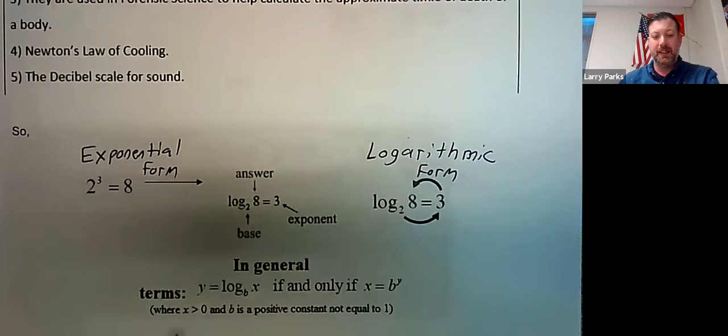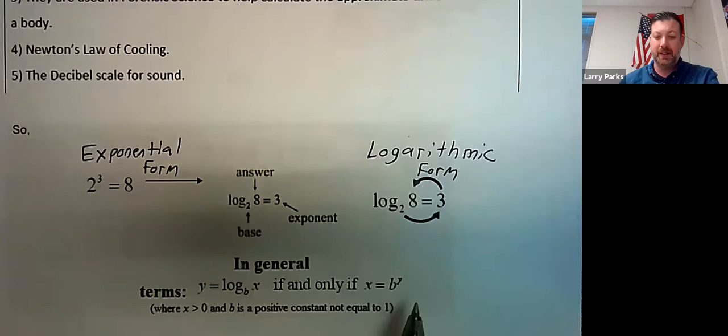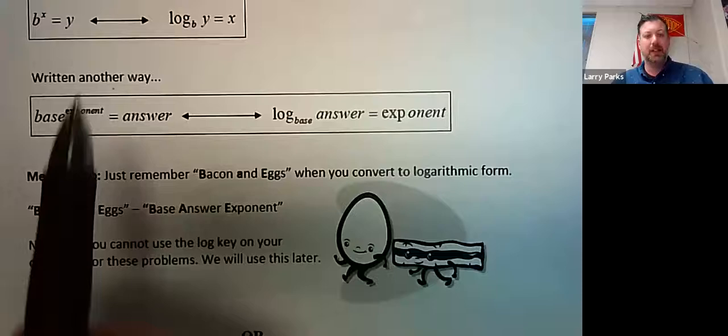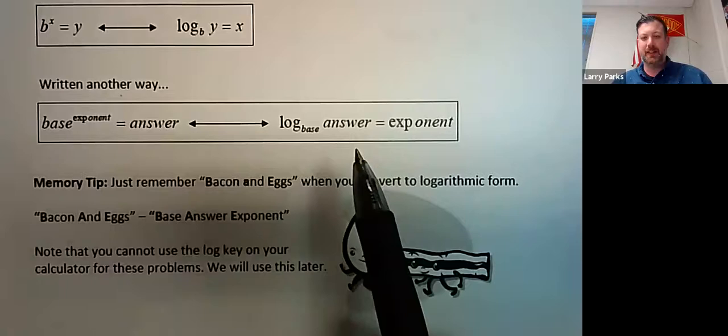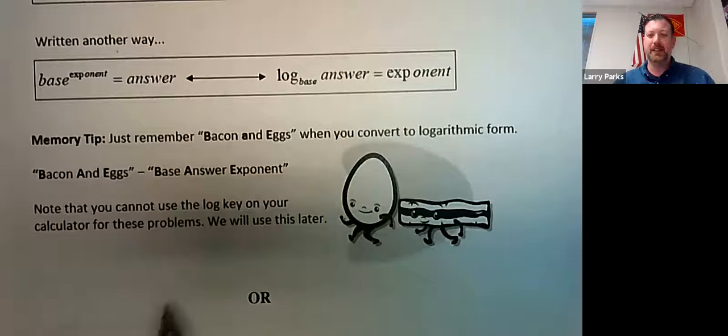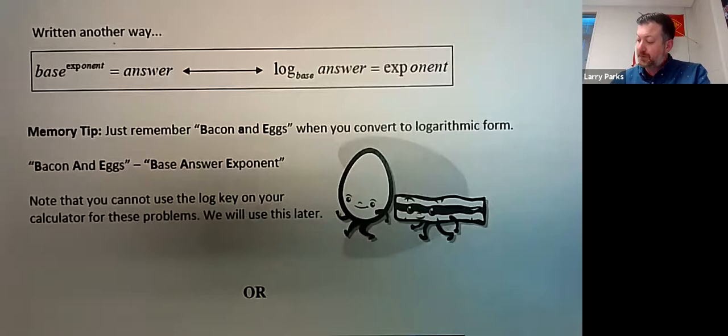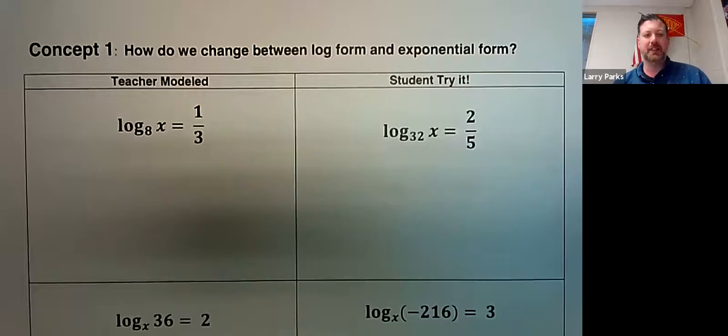One way to remember the structure is: base to an exponent equals the answer, so base to the exponent equals the answer. A helpful mnemonic is 'bacon and eggs': base, answer, exponent. In log form the base is written as a subscript, the answer is inside the log, and the exponent is the result. These conversions aren't too long once you know the pattern.